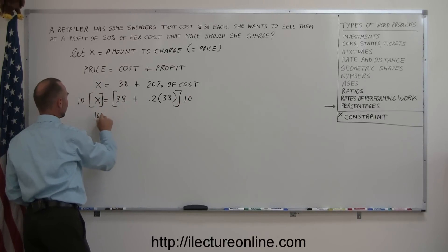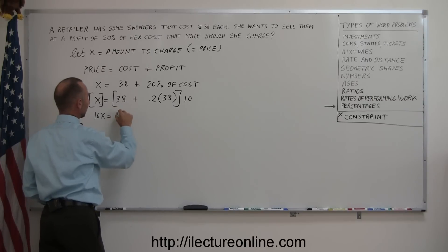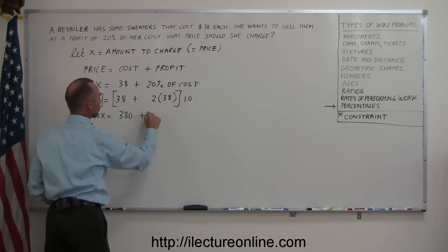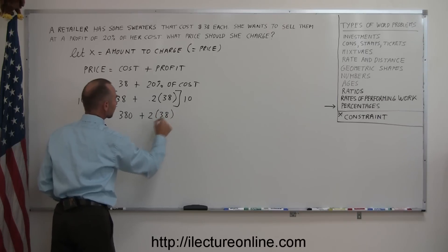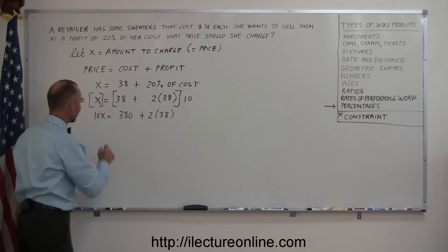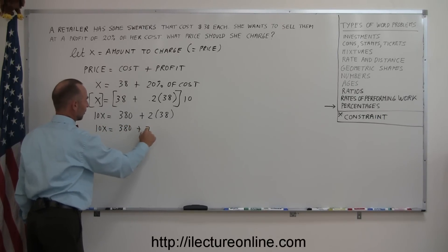So we get 10X equals 10 times 38 is 380. 10 times 0.2 is 2 times 38. Now we go ahead and multiply this out. We have 10X equals 380 plus 76.